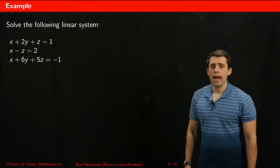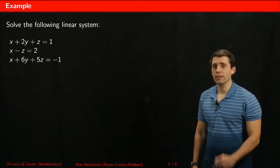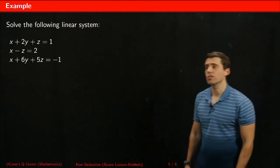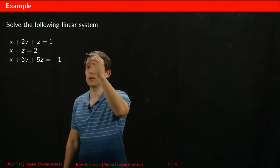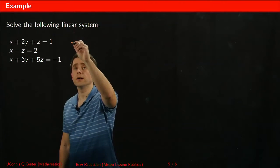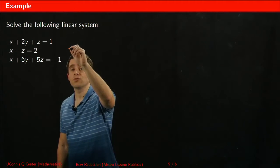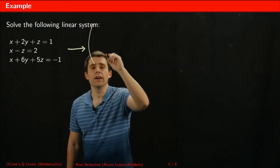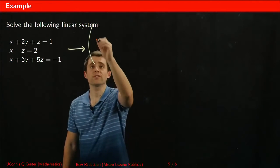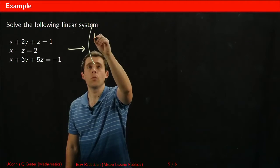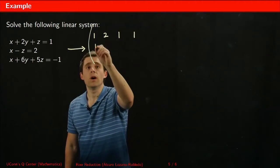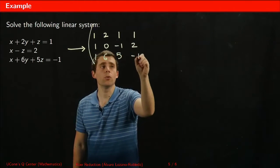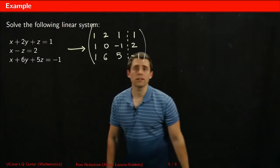Now we'll solve a second example where the solution is going to be different — in this case there will be infinitely many solutions instead of just one. We start the same way: we write the augmented matrix for the system. The coefficients are 1, 2, 1, 1; then 1, 1, 0, minus 1; then 2, 1, 6, 5, minus 1. Here's the augmented matrix.